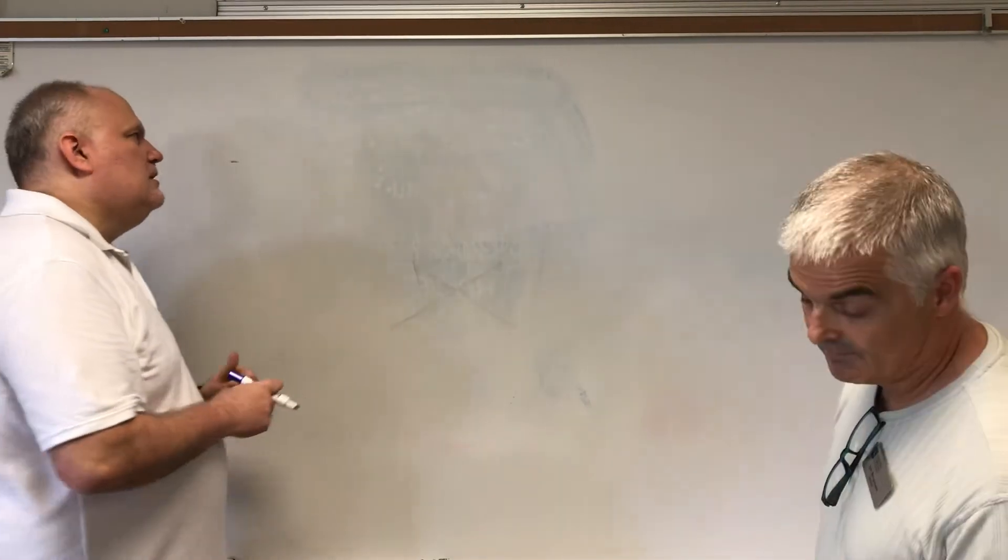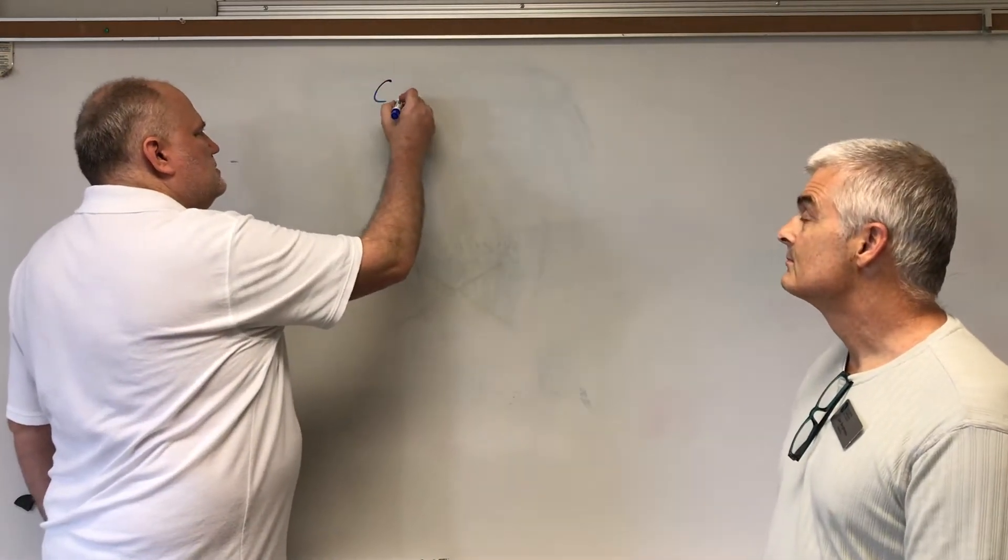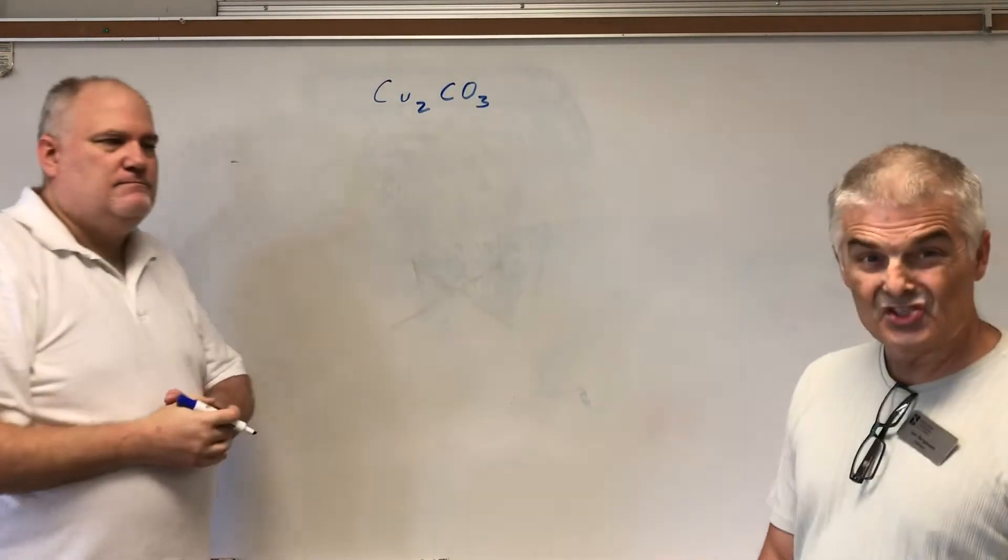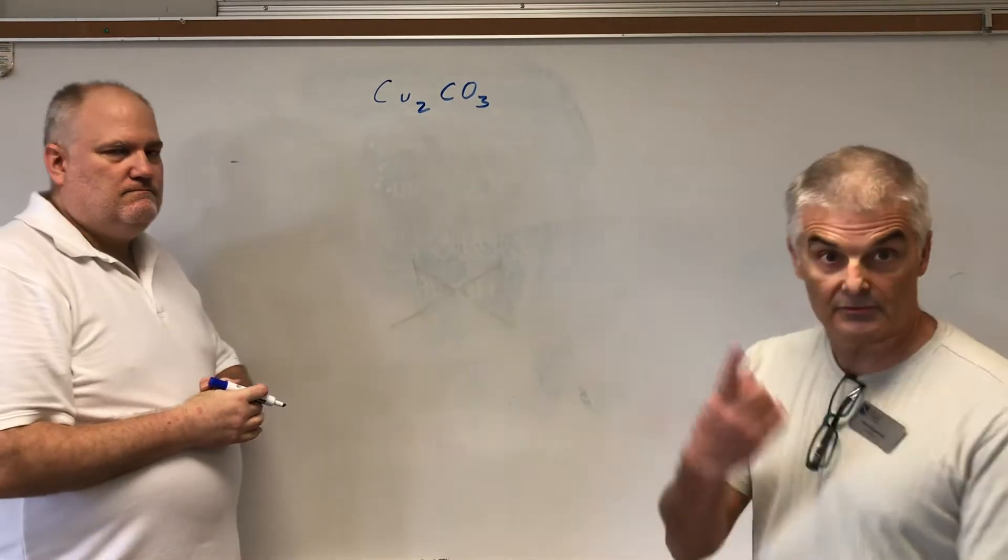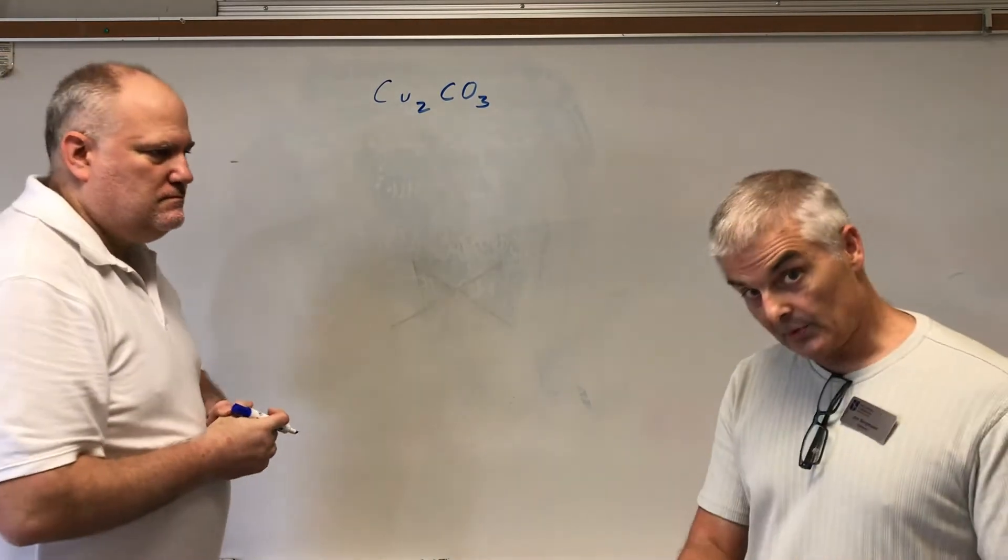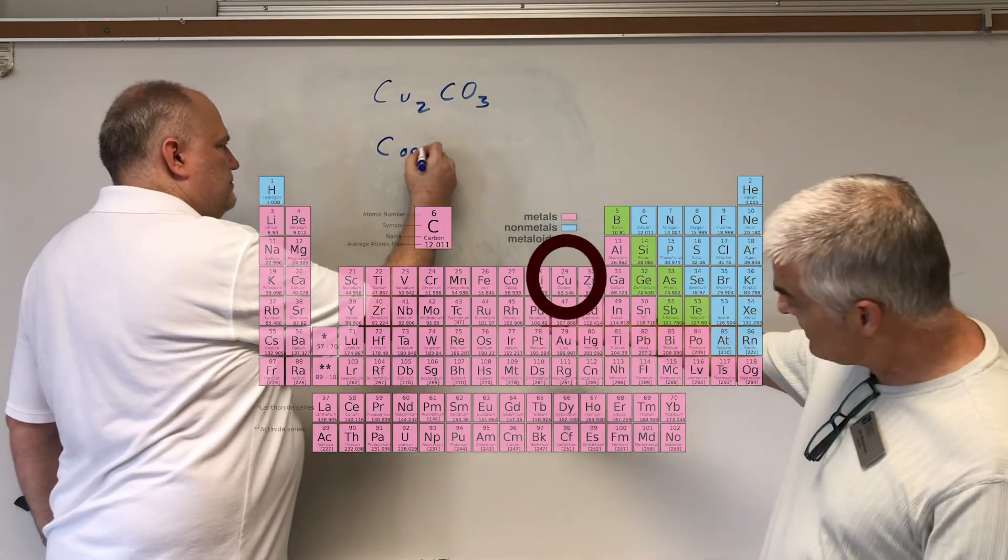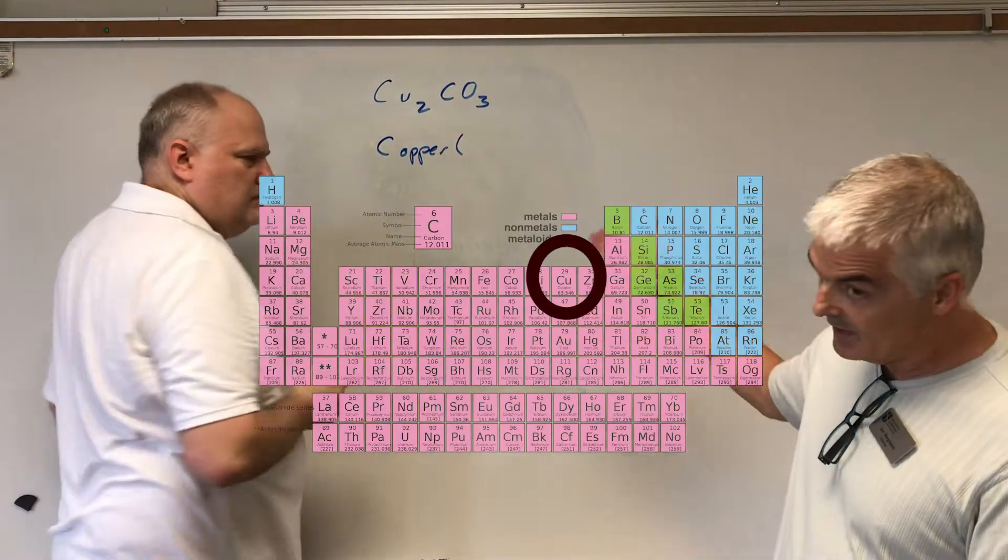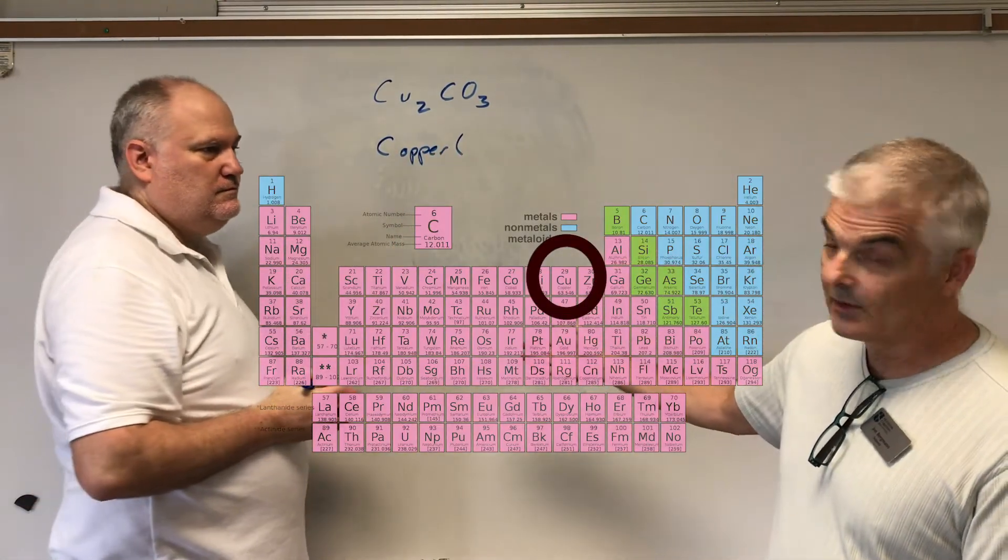Let's do another one. Let's go with Cu2CO3. The first name is Cu, copper. Look at the periodic table right here and you'll notice that copper is a transition metal, so we need a Roman numeral.